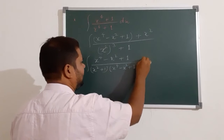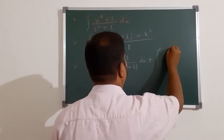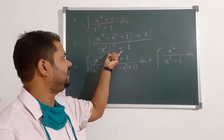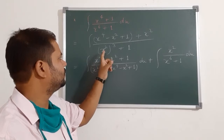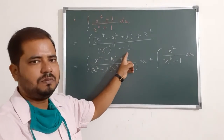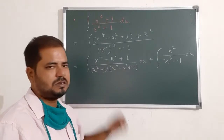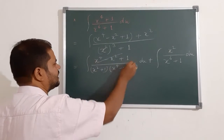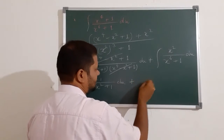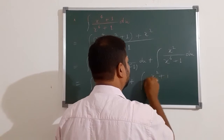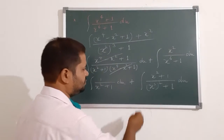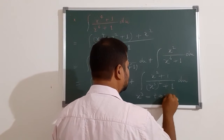We split the integral into two parts. The denominator x to the power 6 plus 1 can be expanded using the sum of cubes: a cubed plus b cubed equals (a plus b)(a squared minus ab plus b squared). Here x to the power 6 plus 1 equals (x squared plus 1)(x to the power 4 minus x squared plus 1). So after splitting, one part gives 1 upon (x squared plus 1) dx. Now substitute x cubed equal to t.